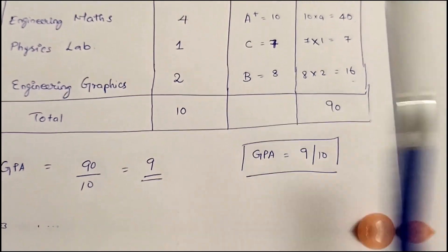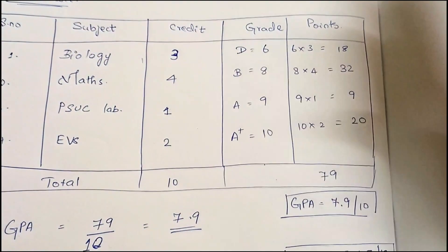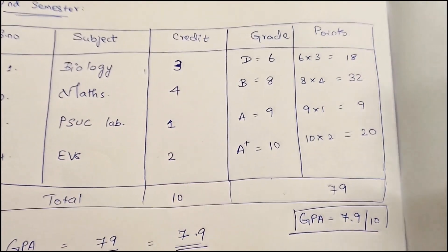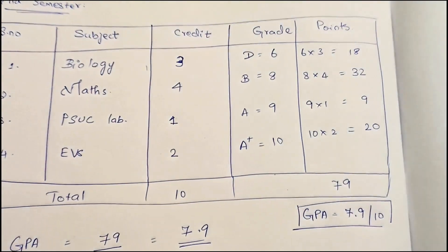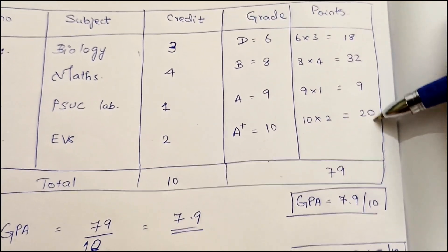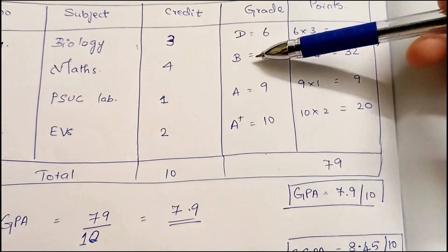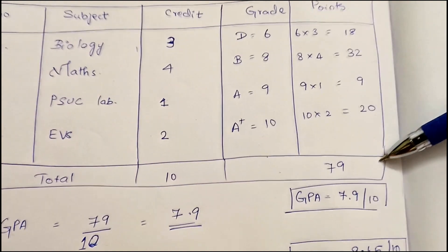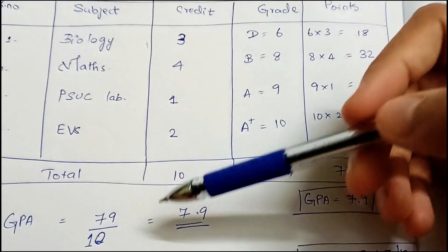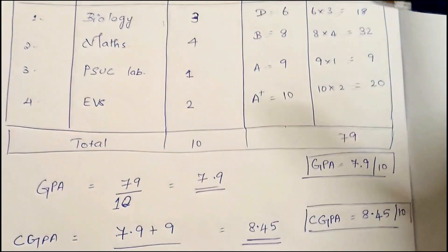Now moving on to the second semester — GPA is calculated in a similar way. Say you have Biology, Maths, PSUC Lab, and EVS as subjects with three, four, one, and two credits respectively, and you get grades D, B, A, and A+. That gives points: 6 × 3 = 18, 8 × 4 = 32, 9 × 1 = 9, and 10 × 2 = 20. Total credits are 10 and total points are 79. So your GPA for the second semester is 79 ÷ 10 = 7.9.